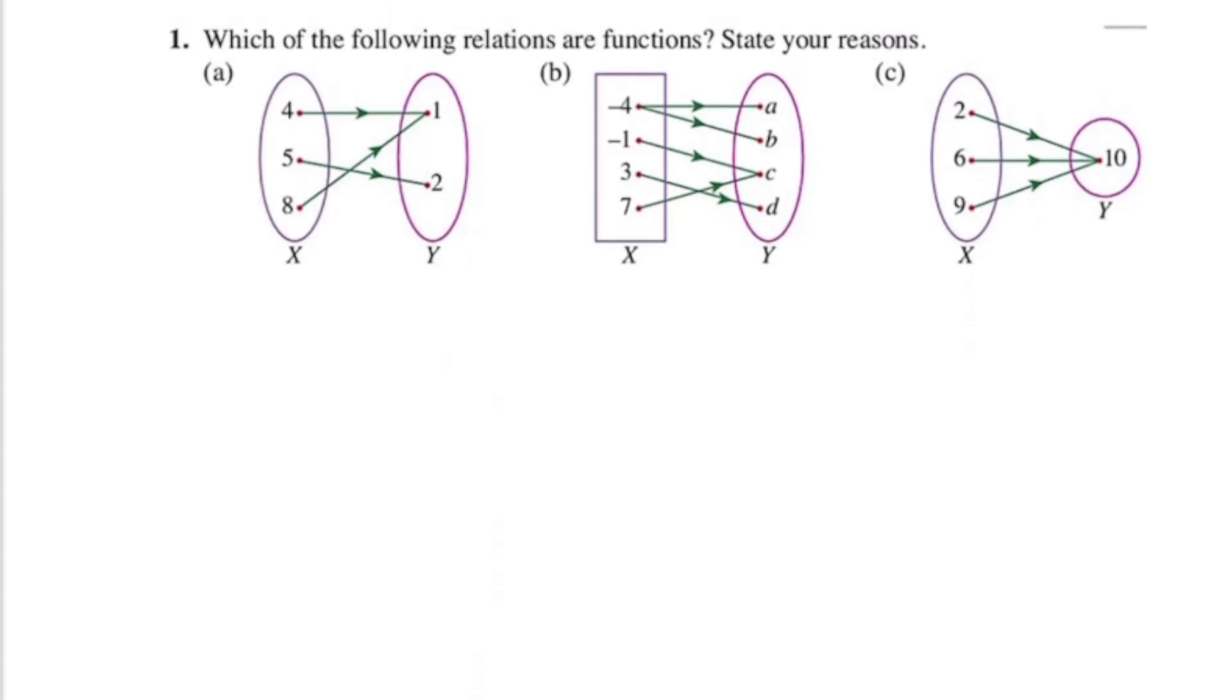Which of the following relations are functions? State your reason. Very simple. Now we know that a function is defined as a relation for which every object has exactly one image. So in this case, 4 has one image, 5 has one image, 8 has an image as well. We know each object has exactly one image, although 4 and 8 share the same image.